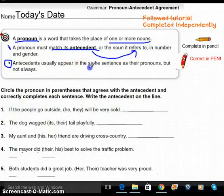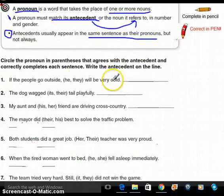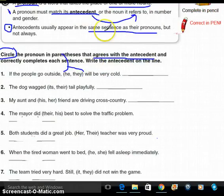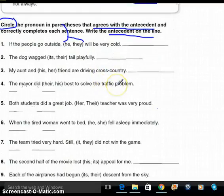Let's go ahead and look at the antecedents bullet to remind us. Antecedents usually appear in the same sentence as their pronouns, but not always. But really for our age level in fourth grade, that should come up quite a bit. All right, let's look at what the activity is so we can practice. Circle the pronoun in the parentheses. And remember, parentheses are those things there and there. That agrees with the antecedent. And correctly completes each sentence. Write the antecedent on the line.